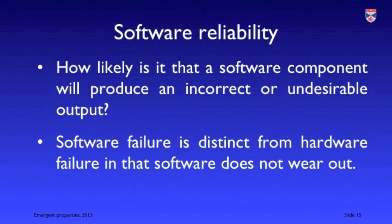For software failure, it's the probability that a component presented with a correct input will produce an incorrect output. But software reliability differs from hardware reliability in important ways. Hardware will always eventually fail because of the laws of physics — hardware wears out. That's not true for software, which does not suffer from normal wear and tear. Also, software failures are often transient: by rebooting or overwriting an incorrect value in the system state, we can repair the problem, making software generally easier to repair than hardware.